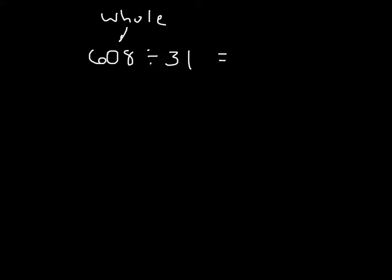It's 608. And the divisor, in this case, is 31. Since we're using estimation here, we'll go ahead and round the divisor first. And what is 31 rounded to the nearest 10? It's 30.